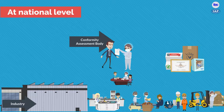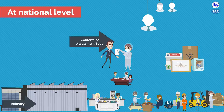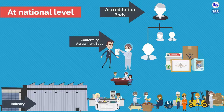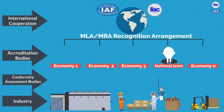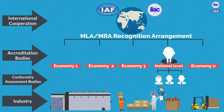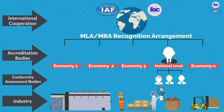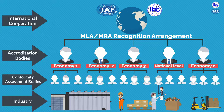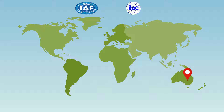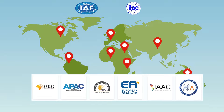Once the product conformity is confirmed, a certificate of conformity or a report is provided to the manufacturer. To prove its competence, the conformity assessment body is assessed at the national level by an accreditation body, which provides an accreditation certificate to the conformity assessment body. A signatory accreditation body to the IAF MLA or ILAC MRA has committed to maintaining its accreditation to the relevant international standards, as well as the requirements set by IAF and ILAC for the consistent application of those standards. Regional cooperation bodies operating a regional MRA or MLA coordinate peer evaluations and in turn also abide by ILAC and IAF procedures and requirements.